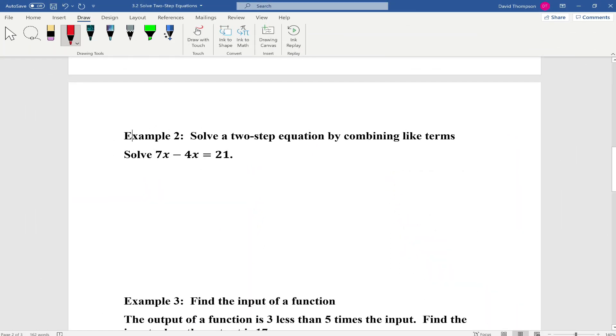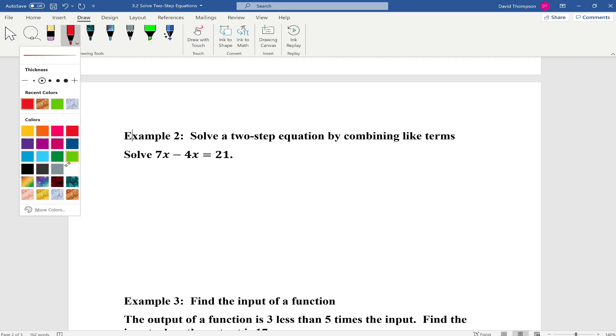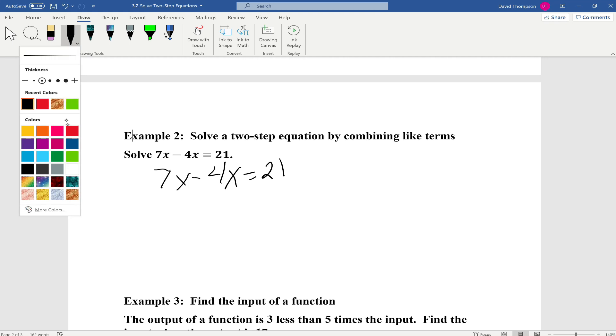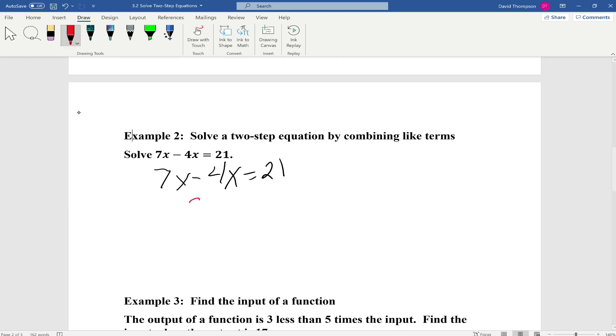We're going to do a two-step equation by combining like terms. We're going to solve 7x minus 4x equals 21. So our first step is we're just going to write the original equation. So that's going to be 7x minus 4x equals 21. We're going to combine our like terms. 7x minus 4x has to be 3x equals 21.